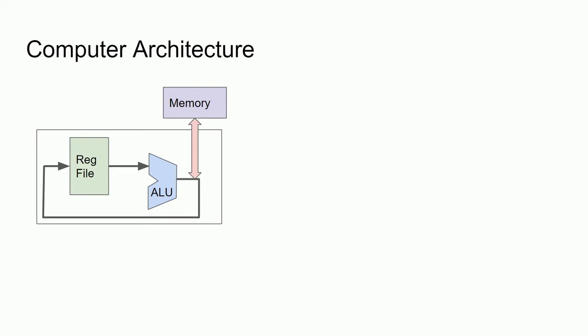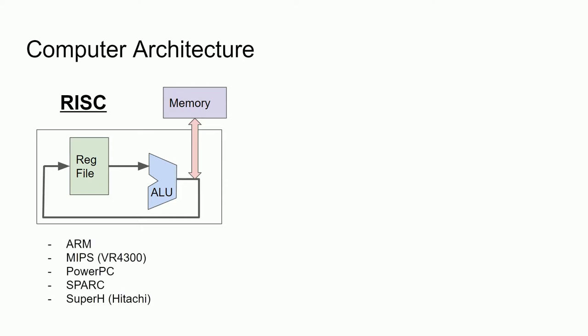Notice how the loop drawn is closed, going from the register file to the ALU and back to the register file. This loop is called the data path and represents the flow of data in the CPU. The bit depth of the CPU — i.e., 8, 16, 32, or 64 bit — is the width of this data path. Even though most CPUs have this internal structure, only the RISC architecture model fully exposes it. Exposing the internal structure to the programmer means the programmer must focus more on the hardware, allowing them to optimize code using low-level instructions. The majority of these instructions act on the registers, with the only memory instructions being load and store. Notable examples of RISC architectures are ARM, MIPS, and PowerPC.